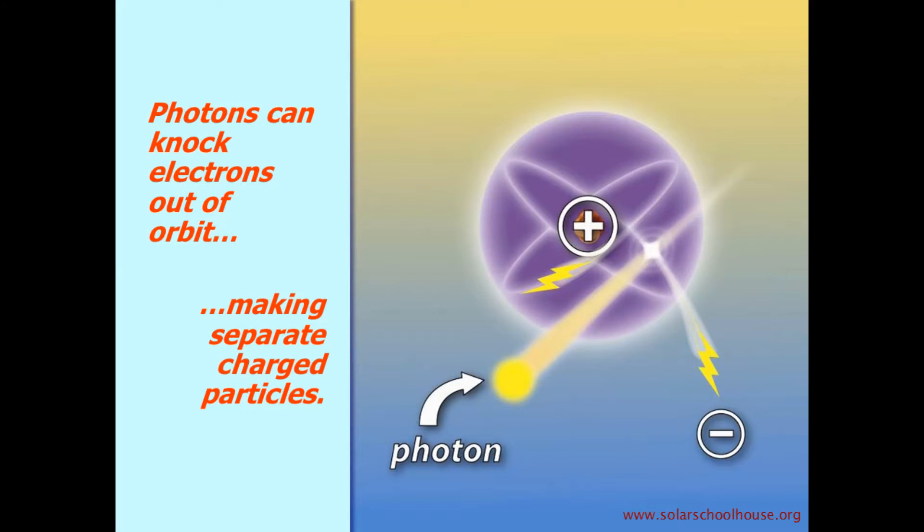sunlight can actually knock electrons out of their orbit around the center of the atom. To understand how this works, we must remember that light itself can behave like particles. When these particles of light, or photons, hit electrons, they give the electrons some of their energy. If they give the electron enough energy, it leaves its orbit around the nucleus of the atom.